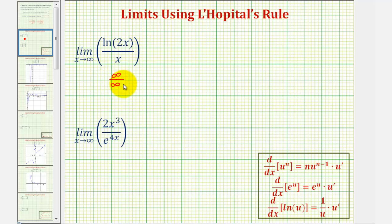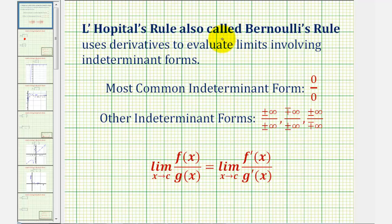Because of the indeterminate form, we can use L'Hôpital's rule to help us determine this limit. L'Hôpital's rule, also called Bernoulli's rule, uses derivatives to evaluate limits involving indeterminate forms. Zero divided by zero is probably the most common indeterminate form, but if a limit has any of these indeterminate forms, we can apply L'Hôpital's rule to determine the limit.